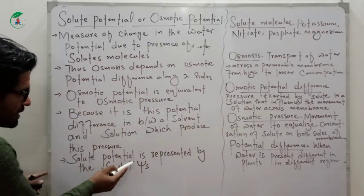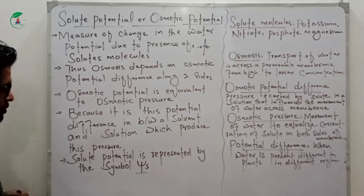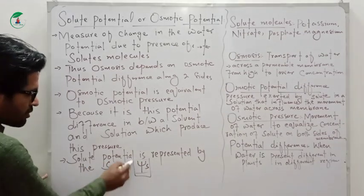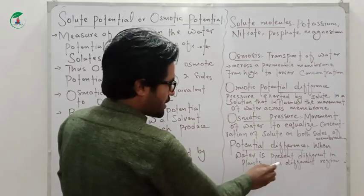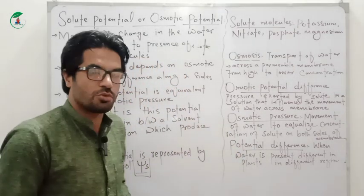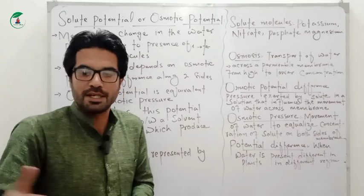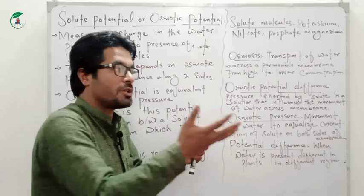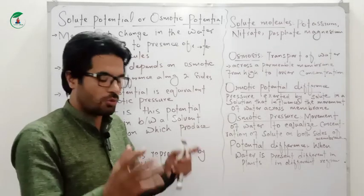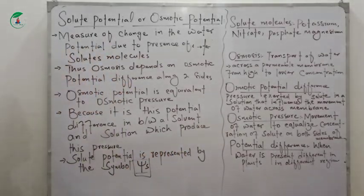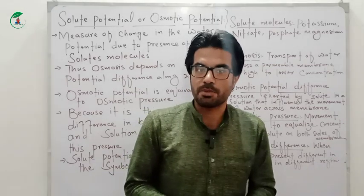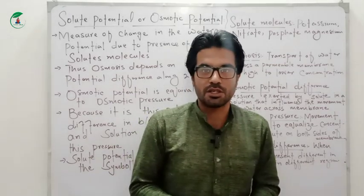Solute potential is represented by a symbol. Water is present in different regions and in plants in different places. The amount of solute potential depends on the amount of solute molecules present — if solute is lower, the potential difference changes accordingly.